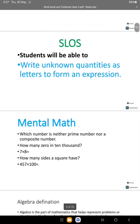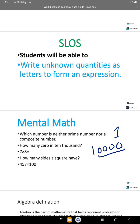Mental mathematics: which number is neither prime nor a composite number? The answer is 1. How many zeros in 10,000? There are 4 zeros in 10,000. 7 times 8 — the answer is 56.